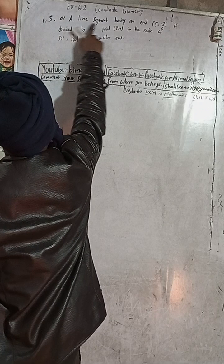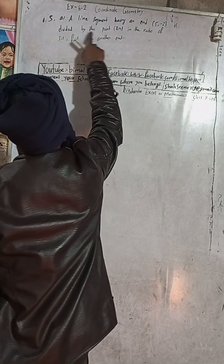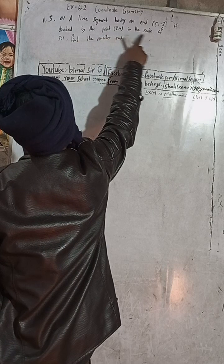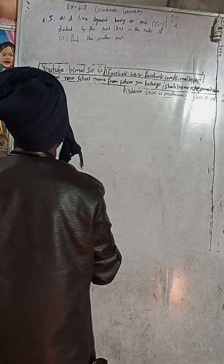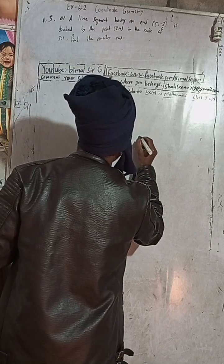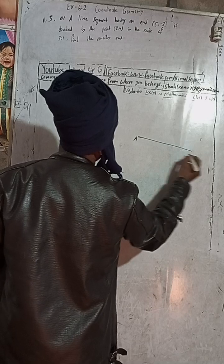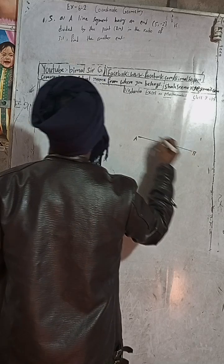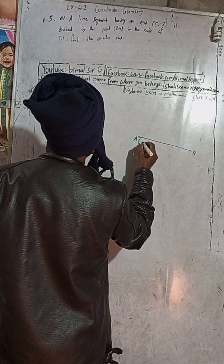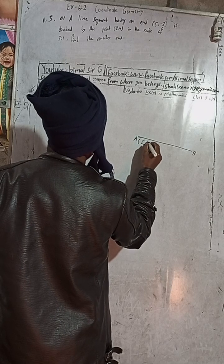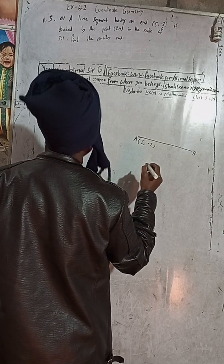Here the question is: a line segment having one end at (5, -2) is divided by the point (8, 4) in the ratio 3 to 1. Find the other end. So this is our line segment. One end I will suppose is equal to (5, -2), divided by the point (8, 4).